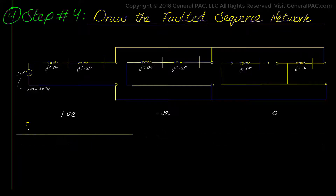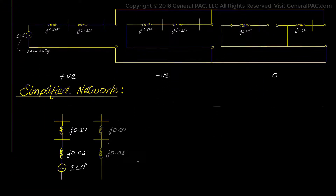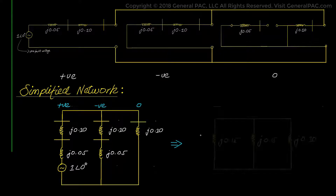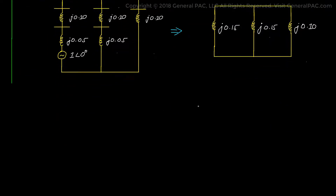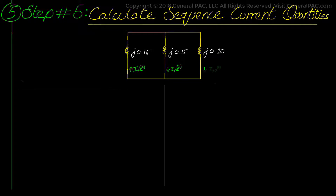To simplify the network and make it easy to relate the formulas with the network, we redraw it in a simpler form. Simplifying further, we see that we have three impedances in parallel with the sequence fault current — positive, negative, and zero sequence — flowing through each branch respectively.